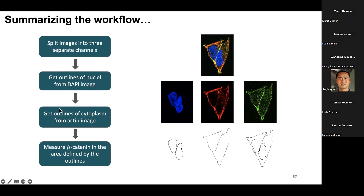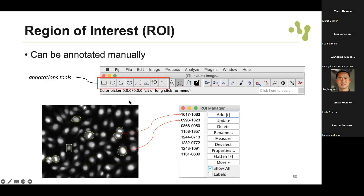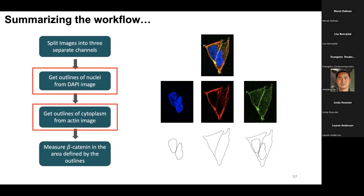Finally we can extract measurements and obtain a table where for each object we have specific defined measures, and analyze it across different experimental groups. To summarize the workflow: split the images into separate channels, get the outlines of the nuclei from the DAPI image, get the outlines of the cytoplasm from the actin image, and finally measure the beta-catenin in the area defined by the outlines.